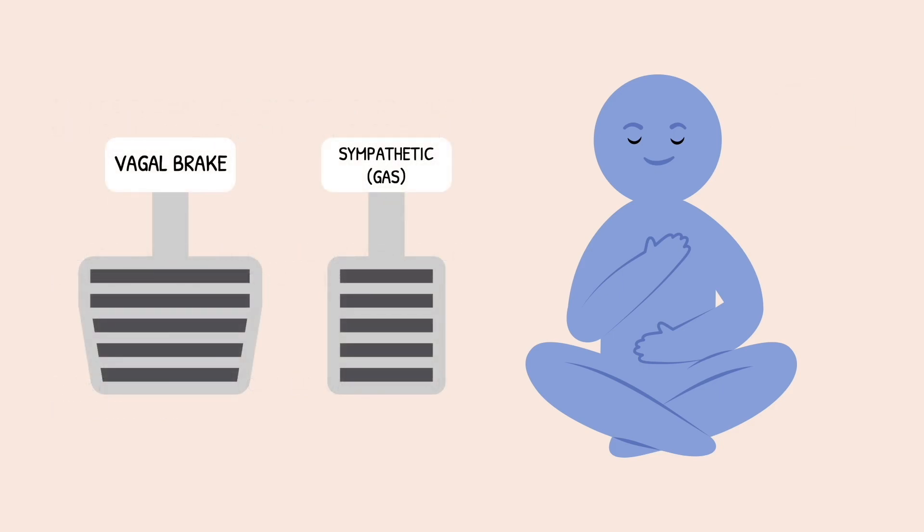Your vagal brake is your body's built-in brake system that helps you stay calm, connected, and in control. Simple practices like slow breathing, humming, or mindful presence can strengthen it and help you move through life with more ease and flexibility.